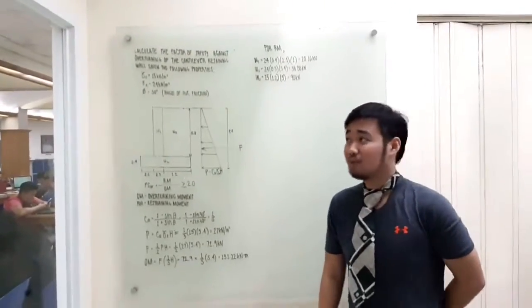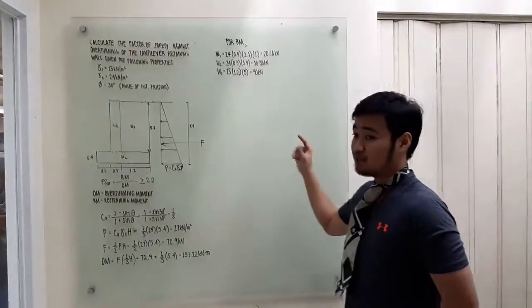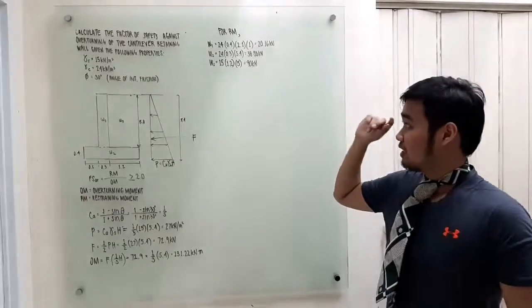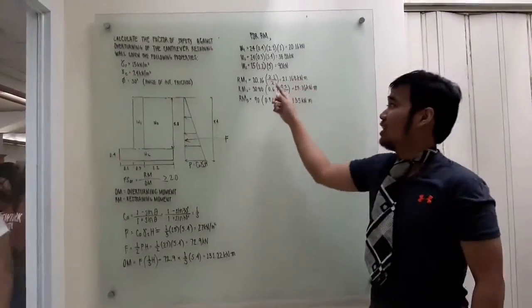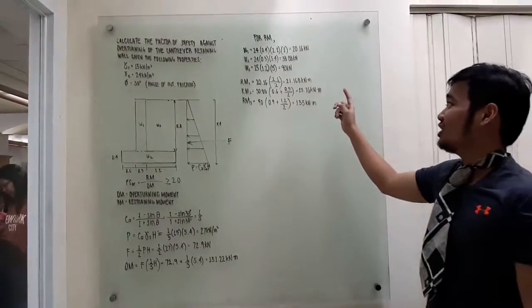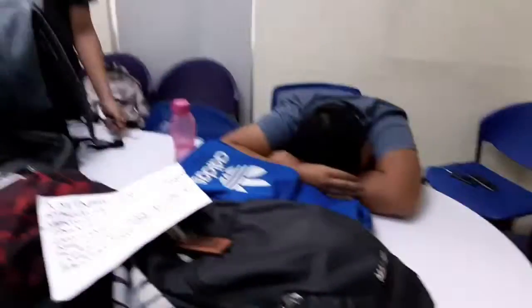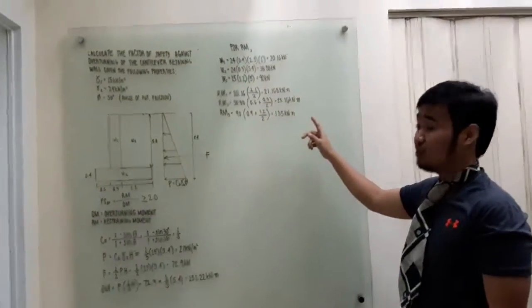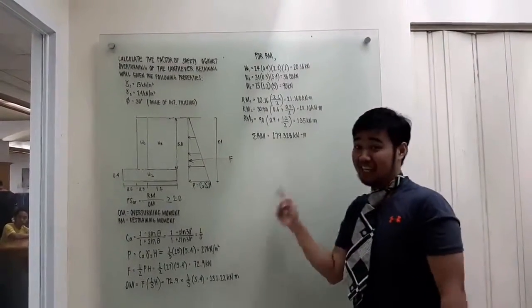Now that we have computed W1, W2, and WS, we multiply them with their corresponding lever arms from the toe. RM1 equals 21.168 kN·m, RM2 equals 23.16 kN·m, and RM3 equals 135 kN·m. The total restraining moment equals 179.328 kN·m.